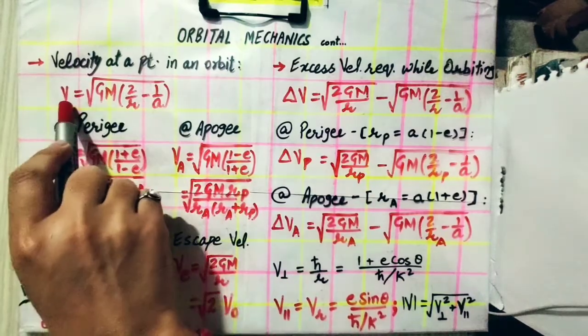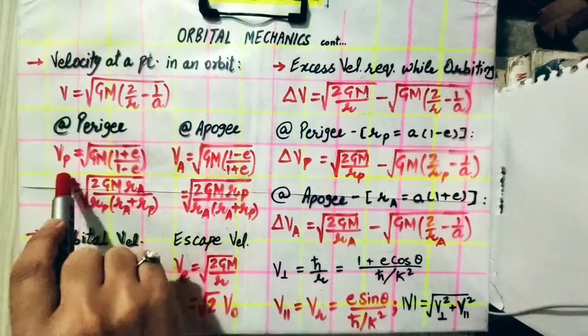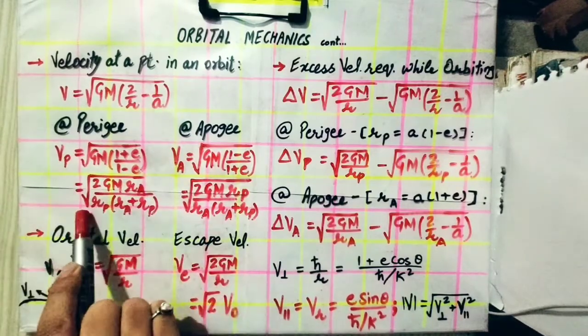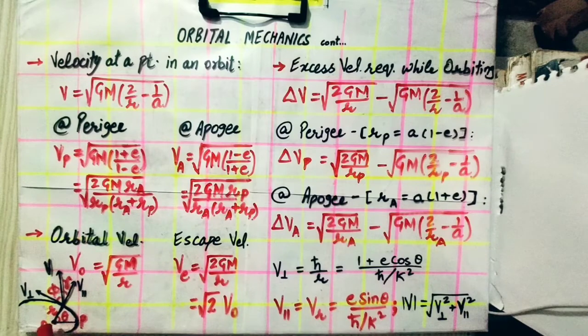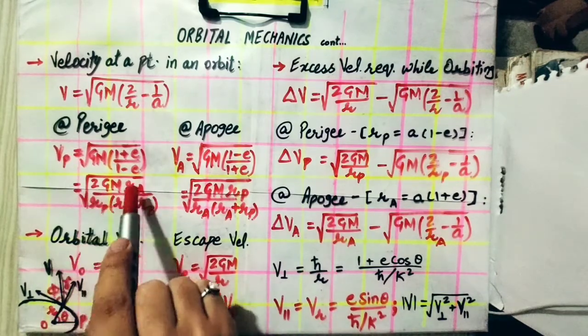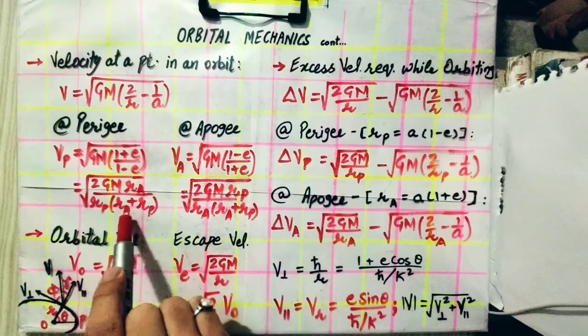Velocity at perigee and apogee are given as follows. Velocity at perigee is under root GM multiplied by 1 plus e upon 1 minus e. And velocity at perigee in terms of radius of perigee and radius of apogee, rp and ra respectively, is given by under root 2GM ra upon rp multiplied by ra plus rp.